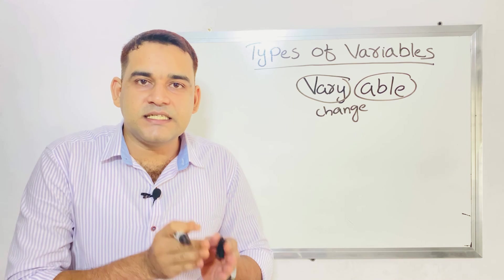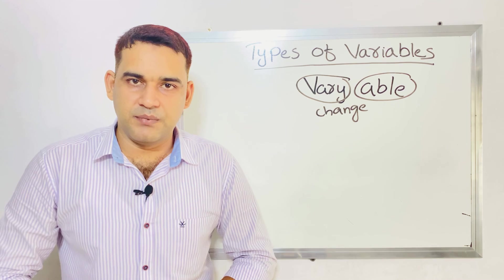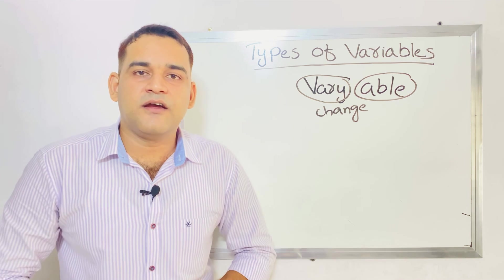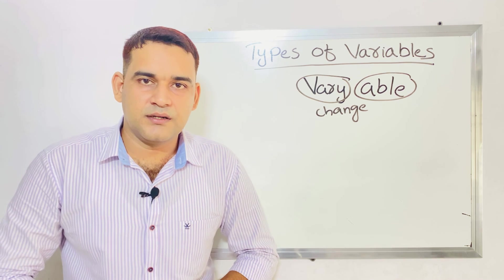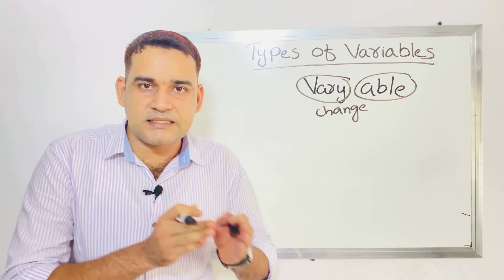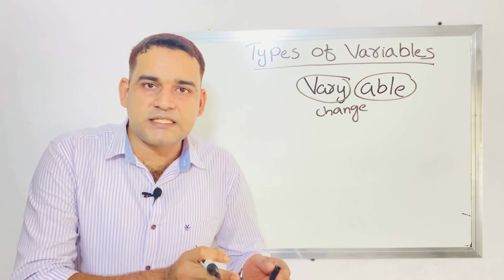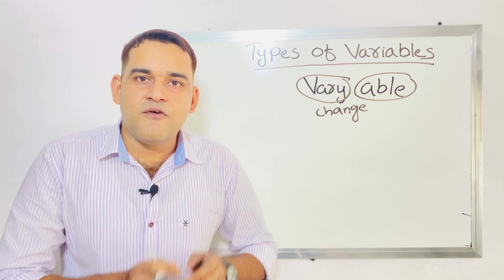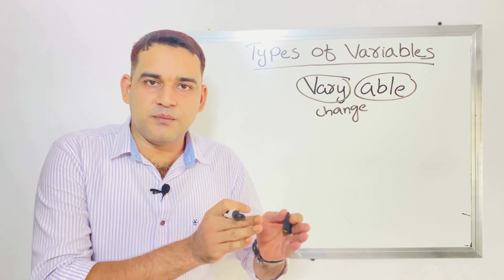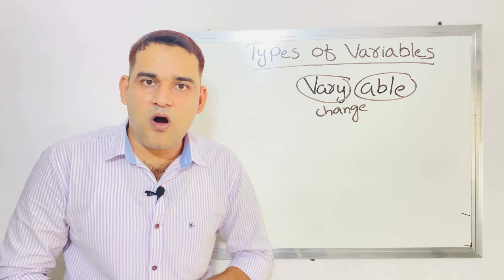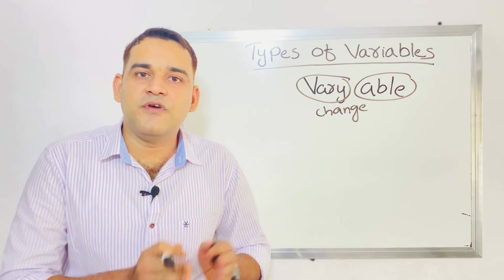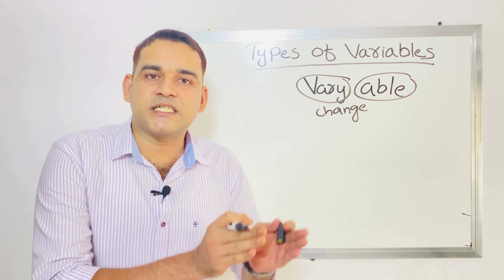For example, age is a variable. Gender is a variable. Income is a variable. Marital status is a variable. Occupation status is a variable. These are examples of variables. All these things can change and we can measure them.